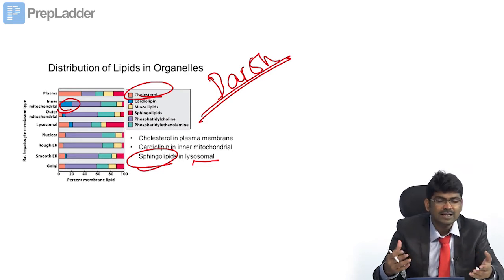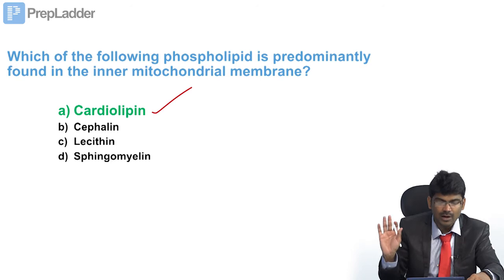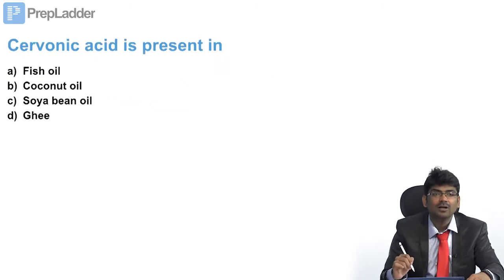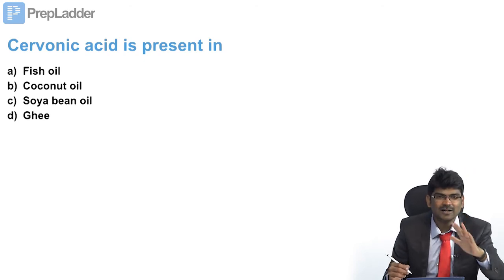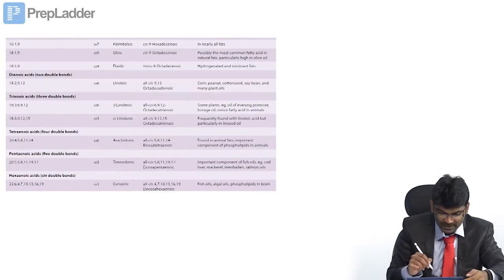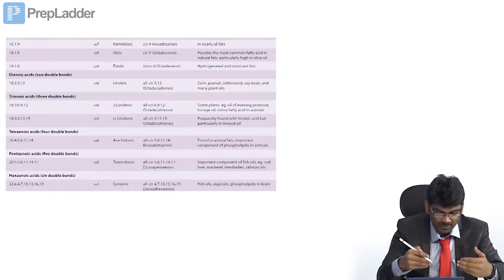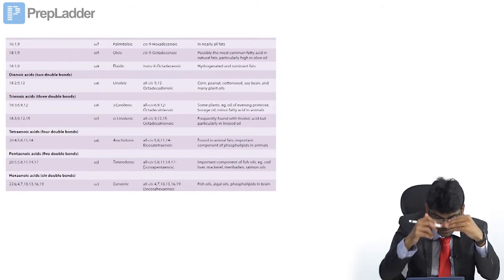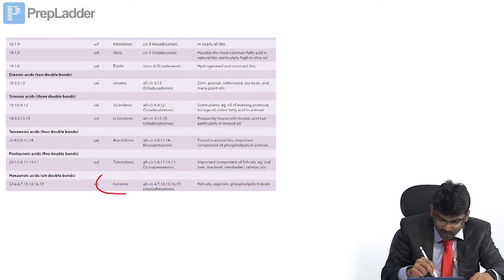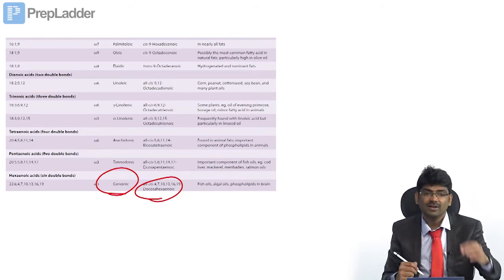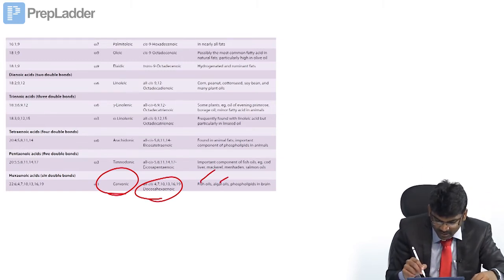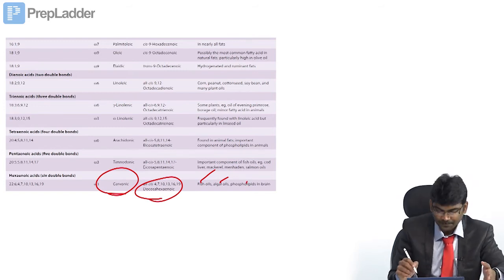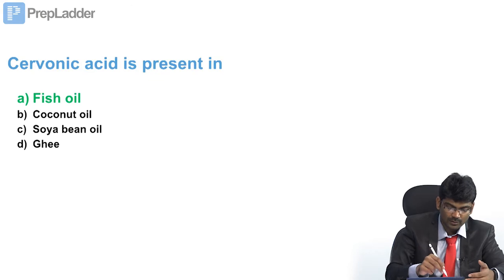Anticardiolipin antibodies are seen in many autoimmune diseases. The answer is cardiolipin. Cervonic acid is a polyunsaturated omega-3 fatty acid — we have already seen this. Cervonic acid is docosahexaenoic acid (DHA). It is present in breast milk but also in fish oil, algal oil, and phospholipids. The answer is fish oil. That is why fish oils are advertised for DHA and brain growth.